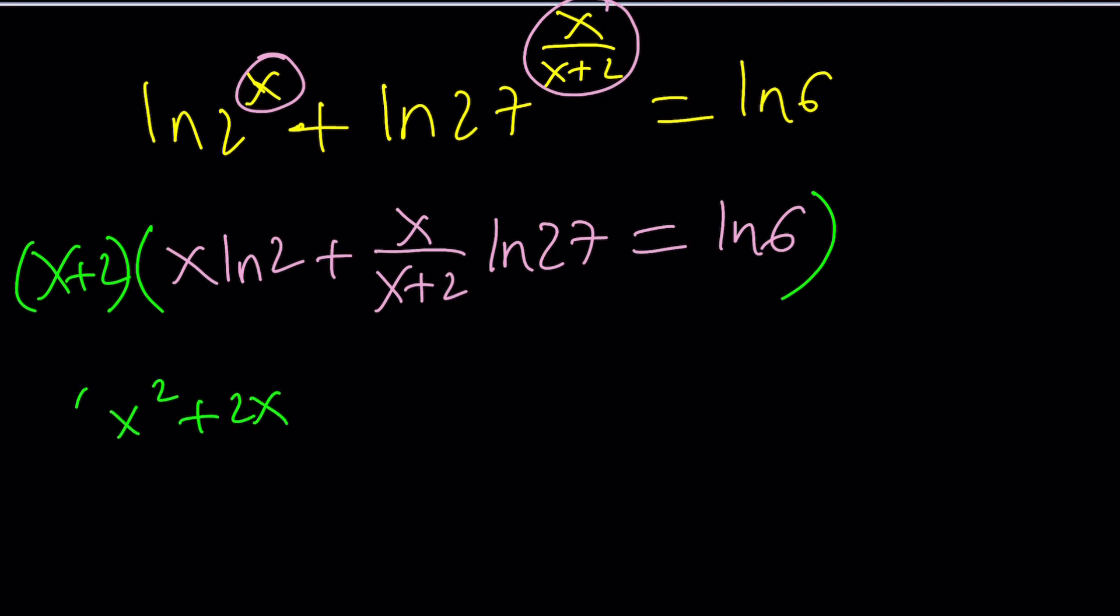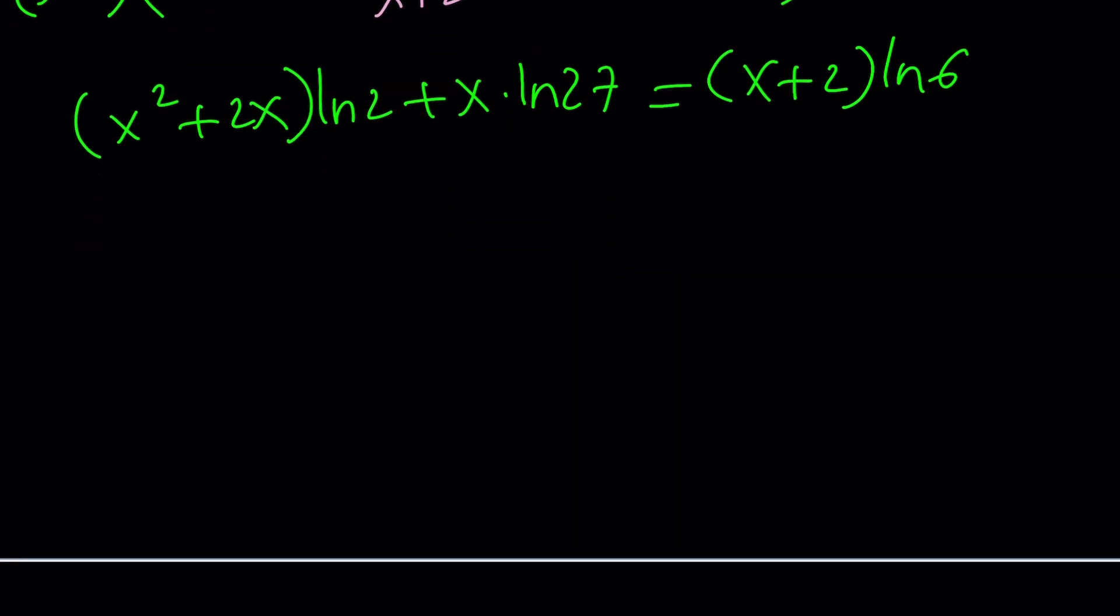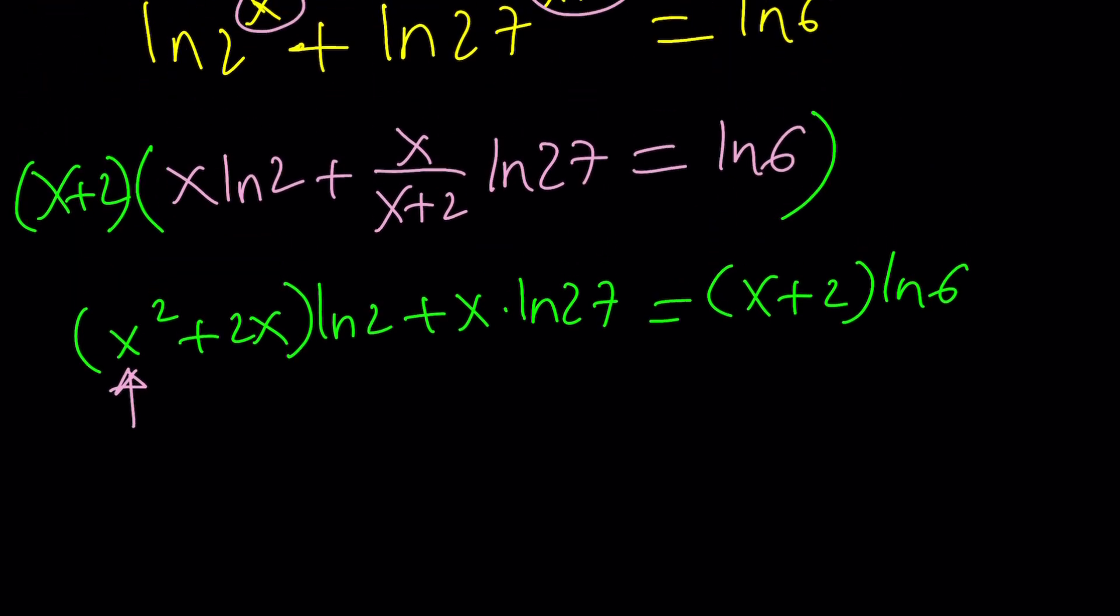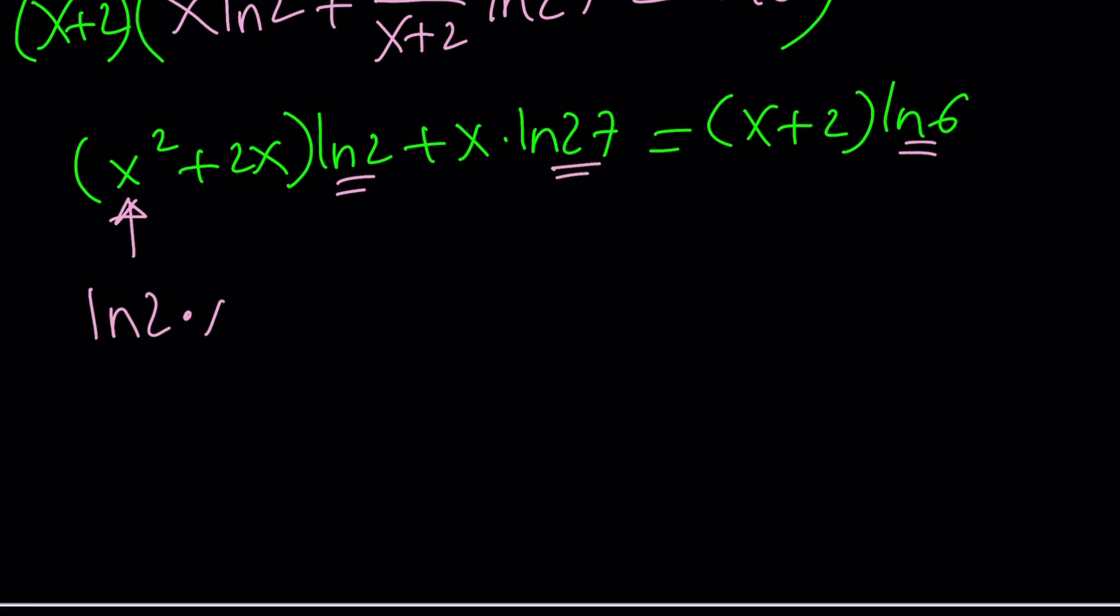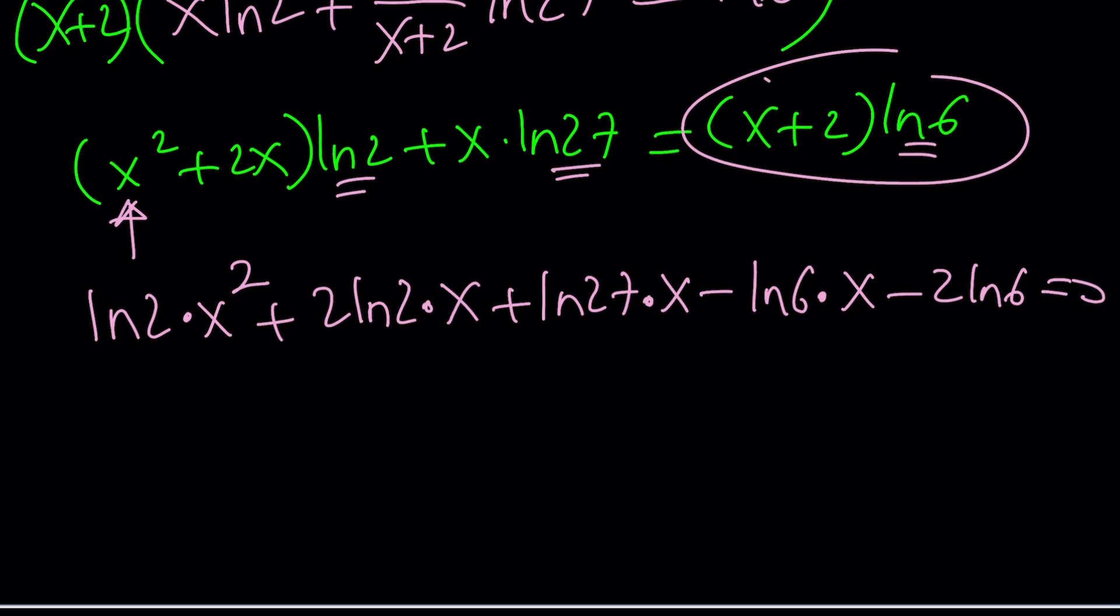When we multiply, it's going to be (x^2 + 2x)·ln2. x+2 is going to cancel out. You're going to get x·ln27. And on the right-hand side, (x+2) will be multiplied by ln6. You get the idea? Now, here's what happens. We get a quadratic from here because of x^2. Quadratic in x, because ln is not a variable. Those are constants, right? These are constants. Now, let's go ahead and distribute. We get ln2 multiplied by x^2. That's going to be the coefficient of x^2. And then we get 2ln2 multiplied by x, and then plus ln27 multiplied by x, and then minus ln6 multiplied by x, and finally minus 2ln6 = 0. I just put these on the left-hand side, negated them. So I put their negations.